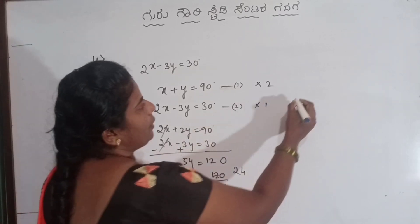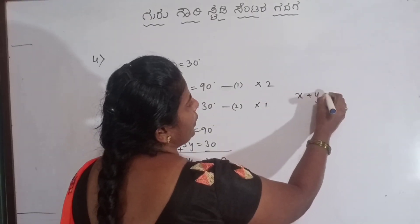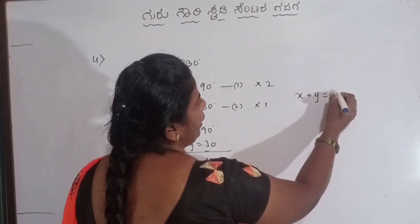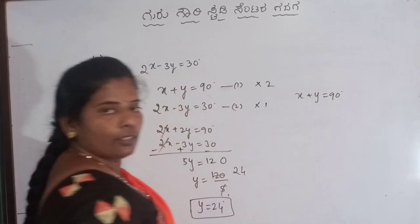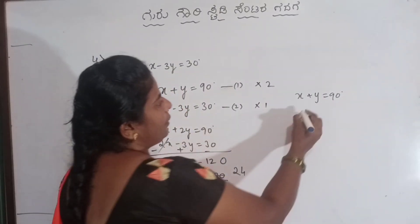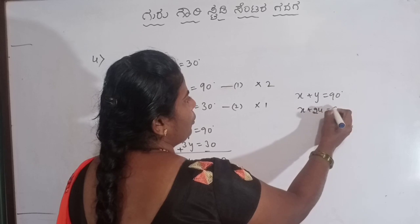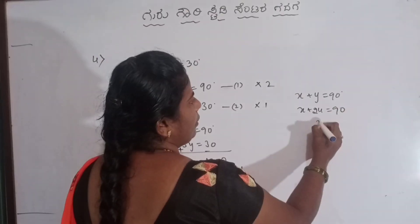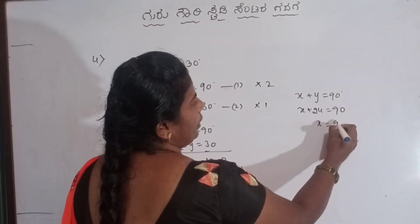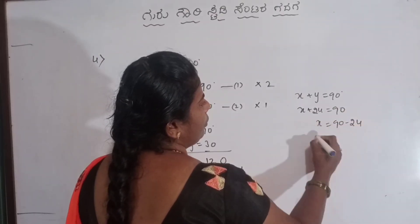In the final part, we have X plus Y equal to a complementary angle of 90 degrees. So X plus 24 degrees equal to 90 degrees. X value: 90 minus 24. X is equal to 66.